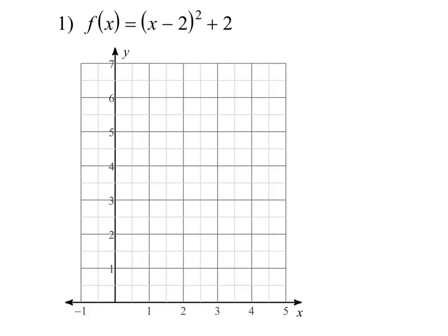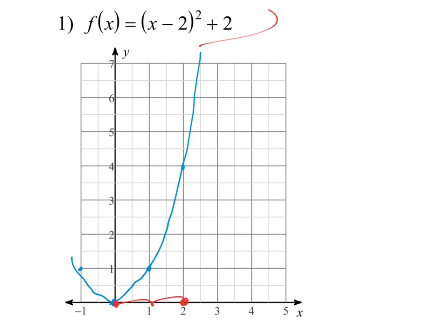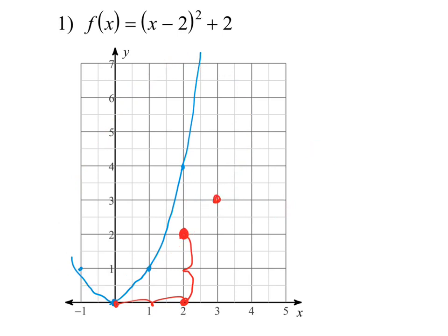Let's do a few examples. Number 1 — remember the base quadratic function. In our function we've got x minus 2 inside, so it's going to move the vertex right 2. We've got plus 2 outside, a K value of 2, so it moves up 2. Here's our new vertex. Then we go to either side using slope of 1, then slope of 3 to get another point. The red one is the one you're supposed to graph; the blue one is the original.